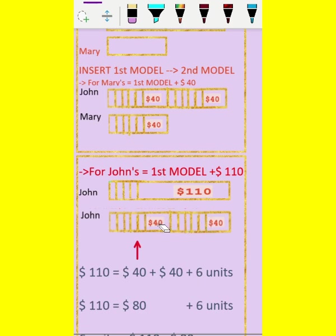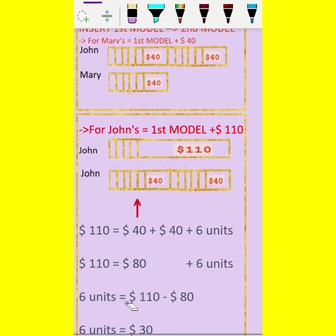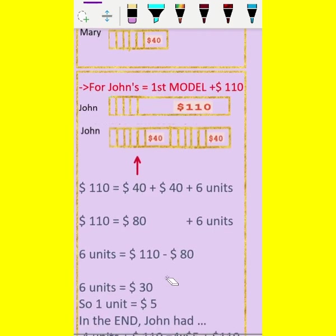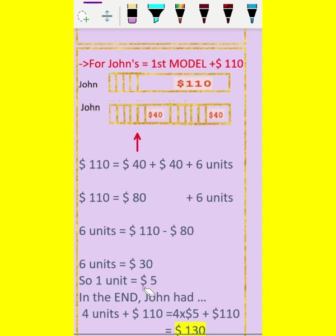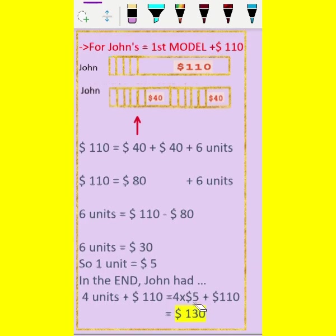plus $40 and $40. So $110 equals 6 units plus $40 and $40. The two $40s make $80, plus 6 units. So 6 units equals $110 minus $80, which is $30. Therefore, 1 unit equals $5. In the end, John has 4 units plus $110, that is 4 times $5 plus $110, which equals $130.